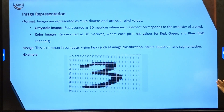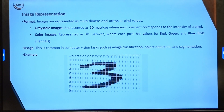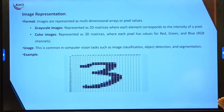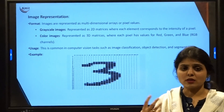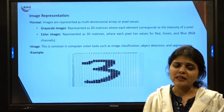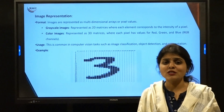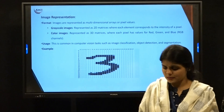We have grayscale images as well as color images. For computer vision tasks such as image classification, object detection, and segmentation, we use this image representation of data, particularly when working with CNN models.